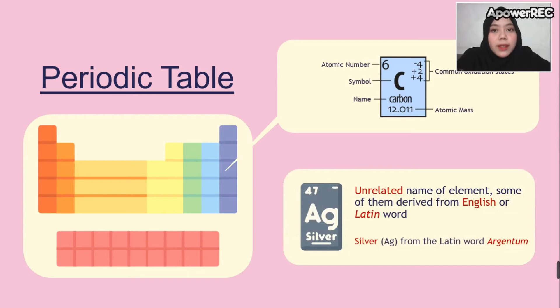Notice that several symbols have names unrelated to the elements' English names — some are derived from English and some from Latin words. For example, Ag: we call it silver in English, but it actually comes from the Latin word 'Argentum.' This happens for many other elements in the periodic table.